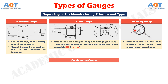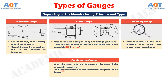Combination gauge. A combination gauge is defined as the gauge which can take more than one dimension of the parts of the material consecutively. It is very useful as at a time more than one measurement of the parts can be taken. It consumes less time and produces more efficient results.